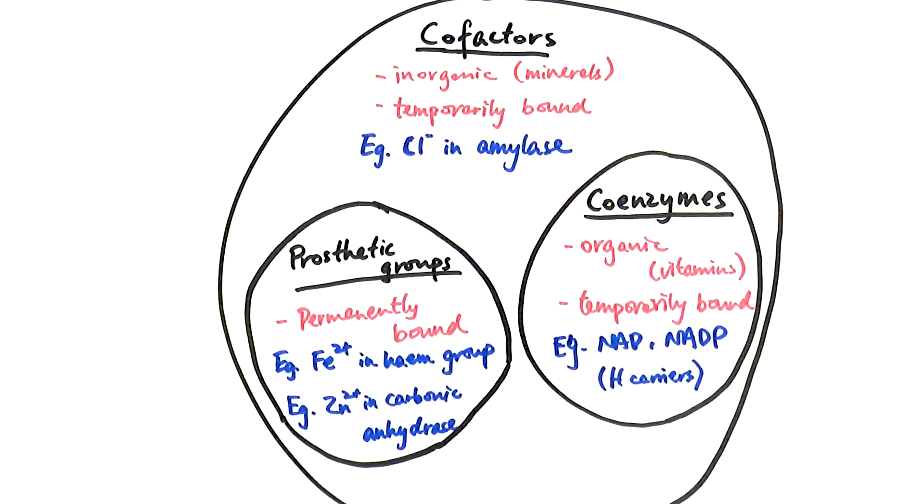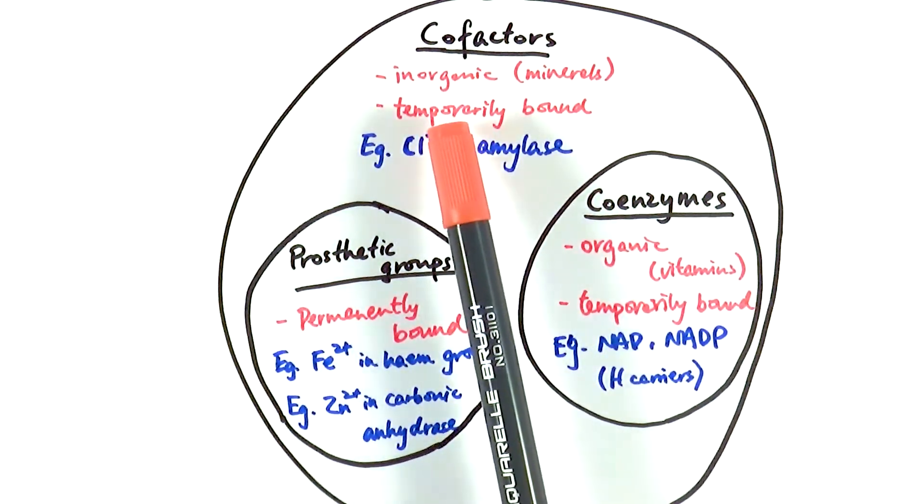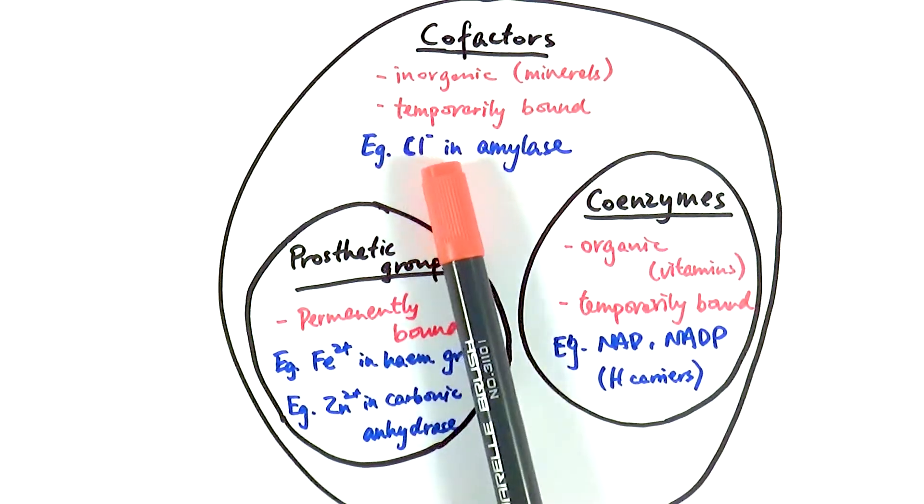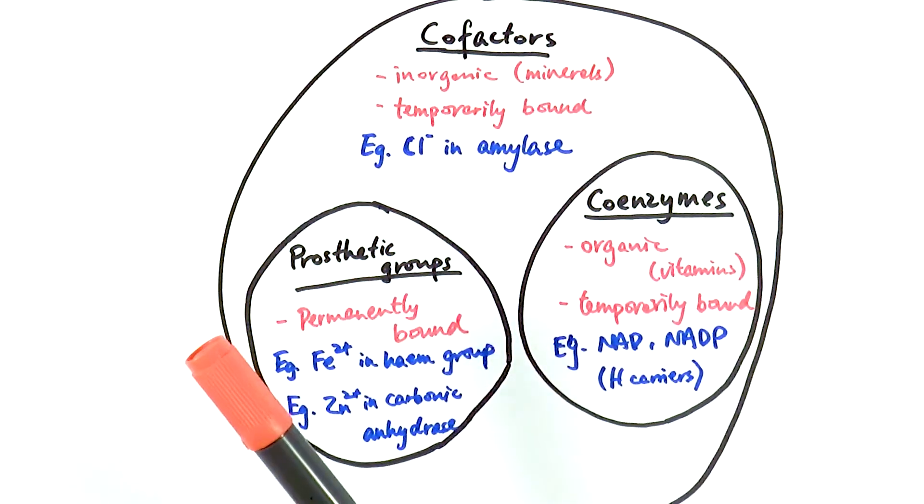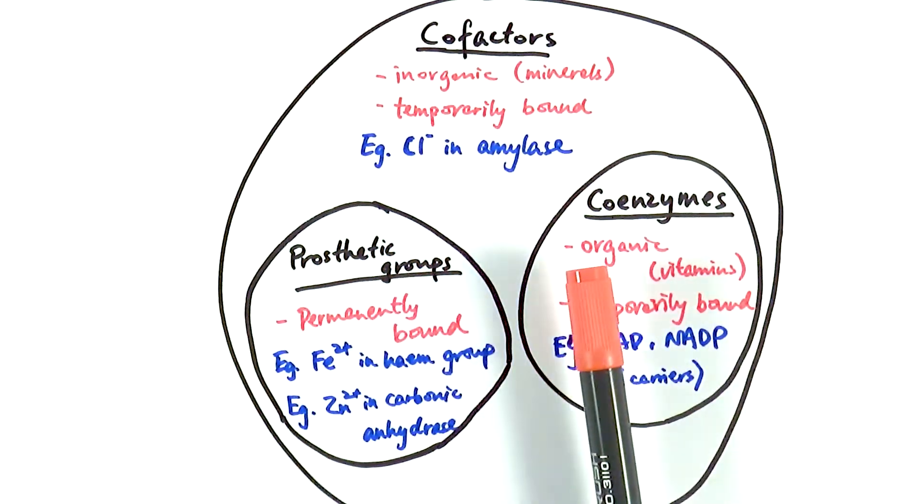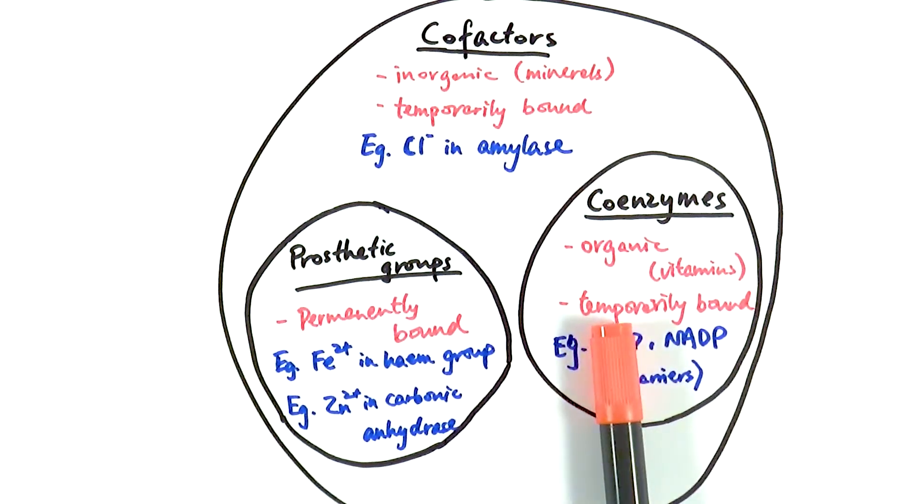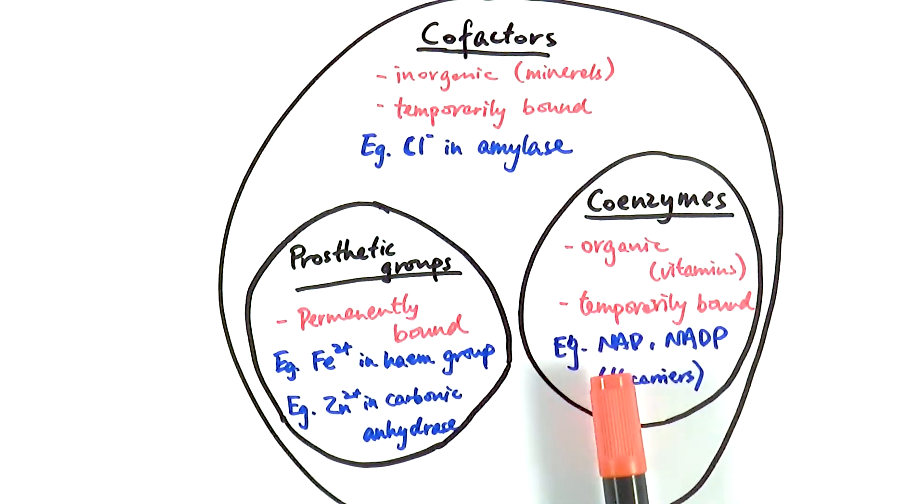So there you have it. Those are the different types of cofactors. Just a very quick recap. We've got cofactors that are chemicals that are inorganic and they're temporarily bound to the enzyme to activate it. An example will be the chloride ions inside amylase. Another type is called the coenzymes, which are organic versions of cofactors, and they are still temporarily bound only. These are things like NAD and NADP,